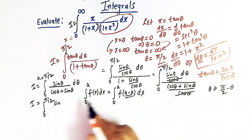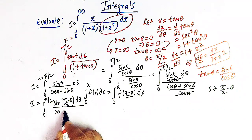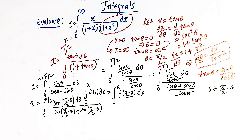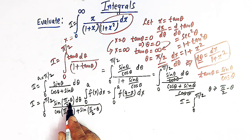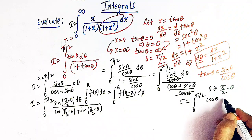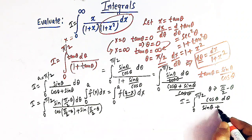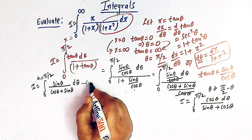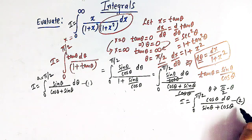So we get I equals the integral from 0 to π/2 of sin(π/2 minus θ) over [cos(π/2 minus θ) plus sin(π/2 minus θ)] dθ. Using trigonometric identities, sin(90° minus θ) equals cos θ and cos(90° minus θ) equals sin θ. This gives us integral number 2: I equals the integral from 0 to π/2 of cos θ over (sin θ plus cos θ) dθ.